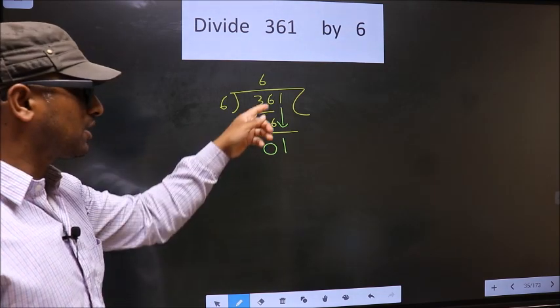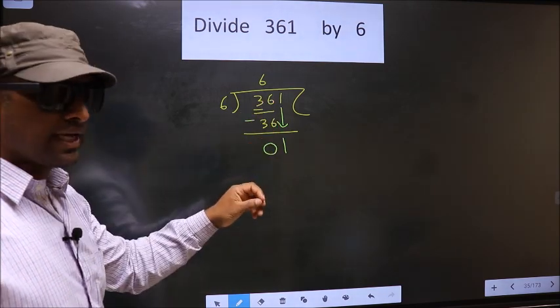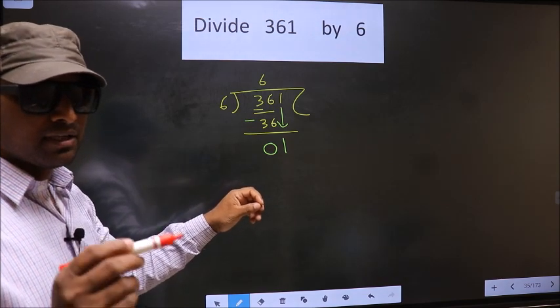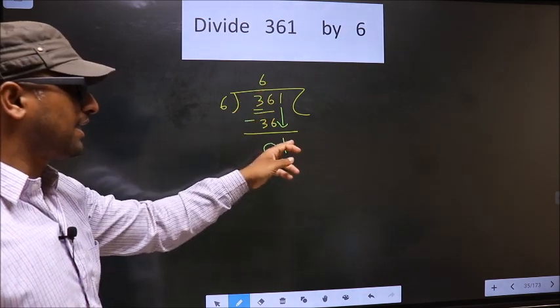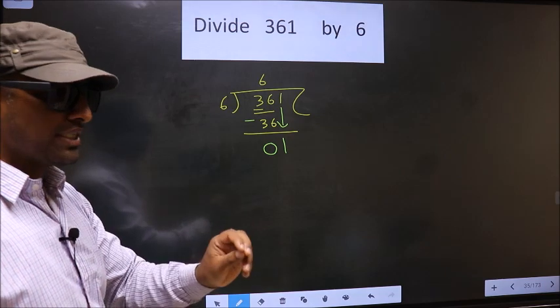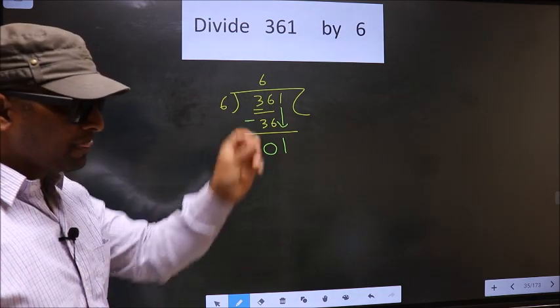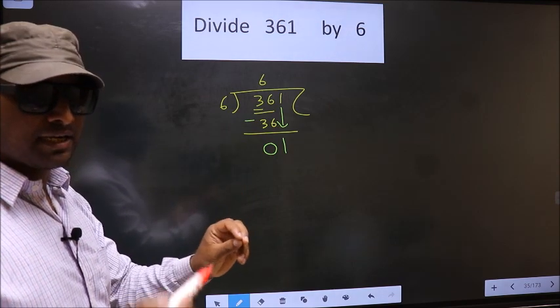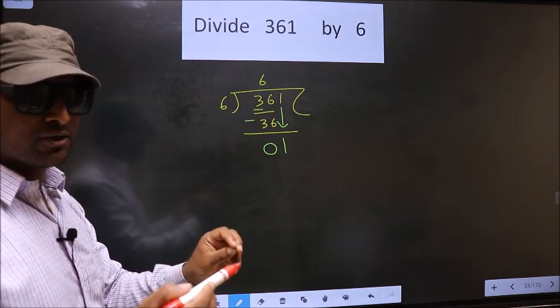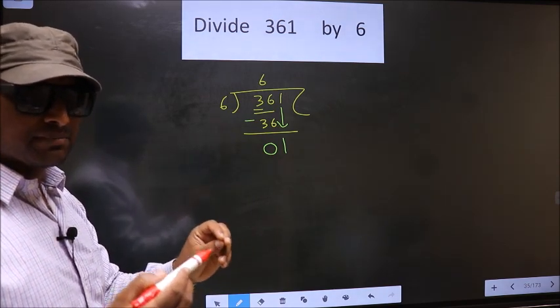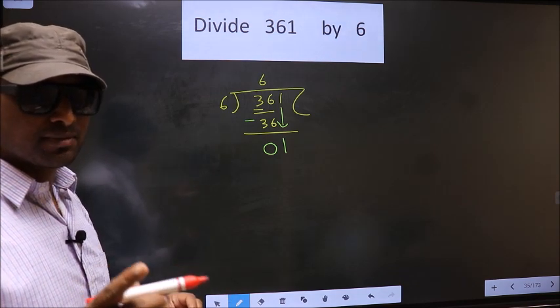Just now you brought the number down, and in the same step you want to put a dot and take 0, which is wrong. I repeat: bringing the number down and putting a dot and taking 0, both at the same step, you are not supposed to do.